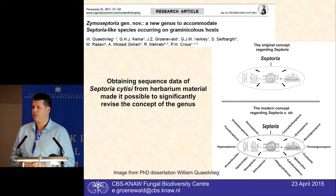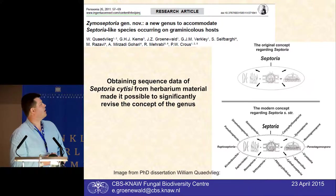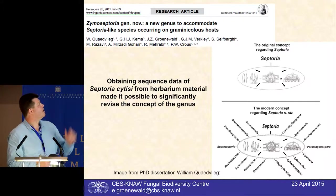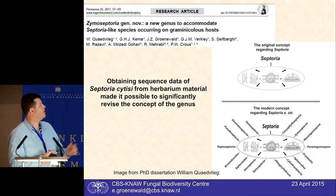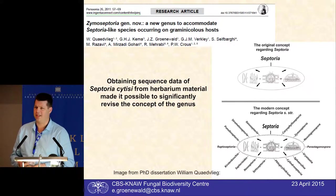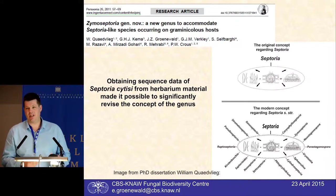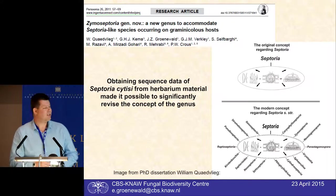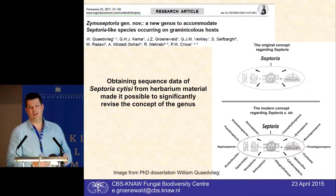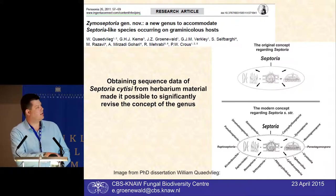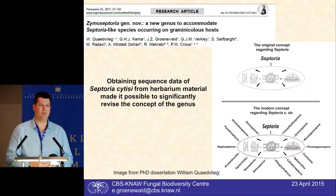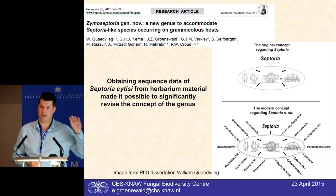Septoria is one of those genera that was a dumping ground for many different species and was quite non-monophyletic. A few years ago one of our PhD students tried to freshly collect the type species; we tried all over Europe and even offered a reward, but that failed. So we got herbarium specimens from many different years and he got permission to isolate DNA from those, and was successful. It took a couple of months, but he finally got a sequence for Septoria cytisi and could revise the whole concept of the genus — it then radiated into many different Septoria-like genera each with its own name. That was only possible because we had the type species in our trees.